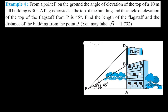In this picture, from point P on the ground, here is the building AB which is 10 meters tall. The angle of elevation to the top of the building is 30 degrees. A flag is hoisted at the top of the building, and the angle of elevation of the top of the flagstaff from P is 45 degrees — that's for point D.